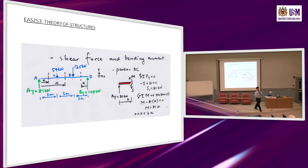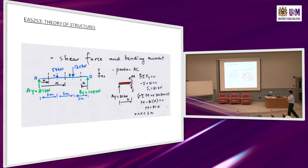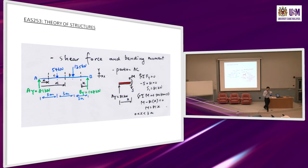You must indicate where X is measured from. The X for the AC portion is measured from A. The X for the CD portion is also measured from A. But the X for the DB portion is measured from B. Always indicate the X and from where it is measured.